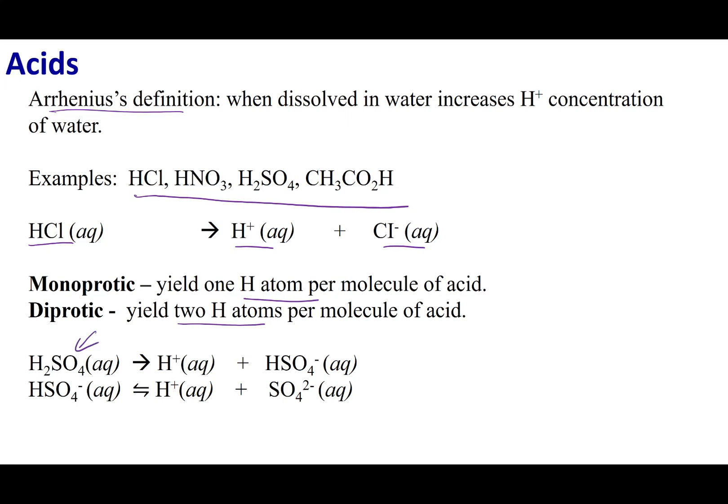So an example is H2SO4. H2SO4 is going to give up one H plus ion and make the bisulfate ion. And then this bisulfate ion can give up its H plus to make the sulfate ion.